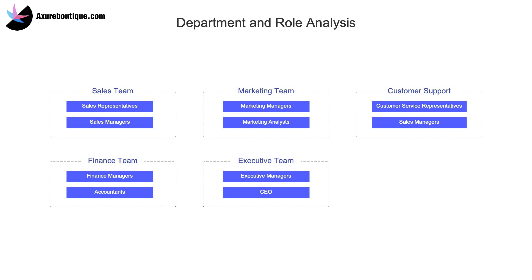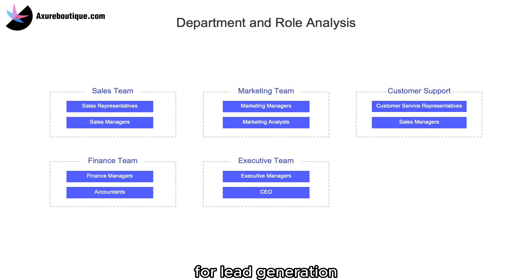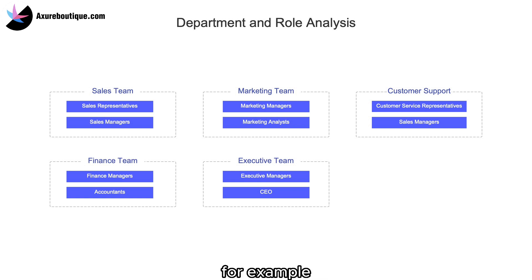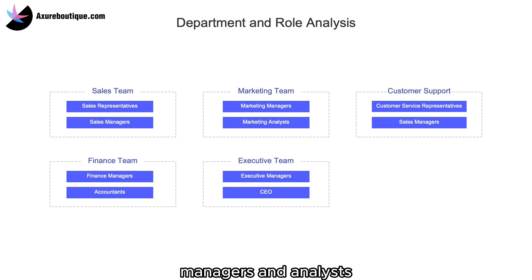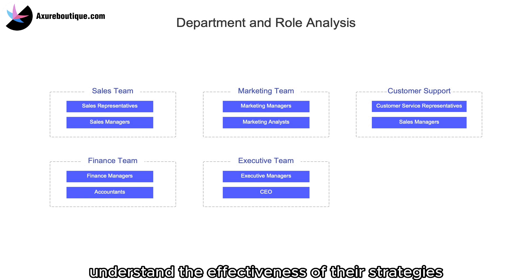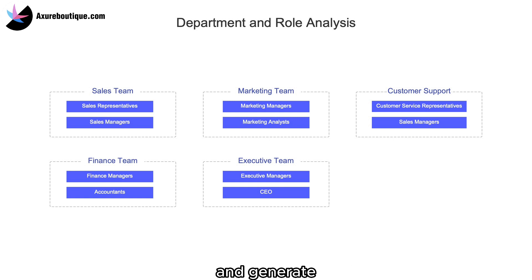Marketing team — Marketing managers and marketing analysts. A CRM system can provide features for lead generation and campaign management. For example, it can track and analyze website traffic, capture leads from various sources, and measure the conversion rate of marketing campaigns. This helps marketing managers and analysts understand the effectiveness of their strategies, optimize marketing efforts, and generate valuable insights for decision-making.